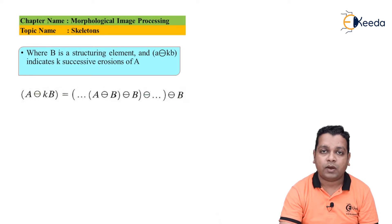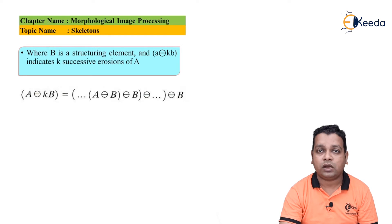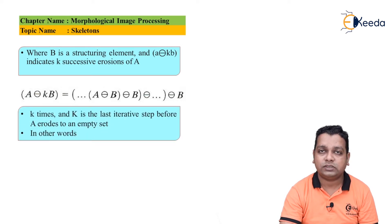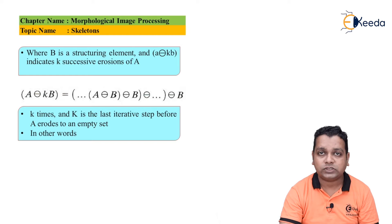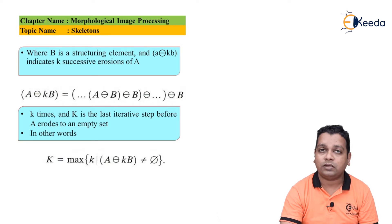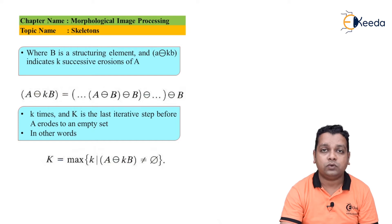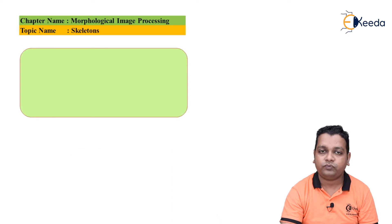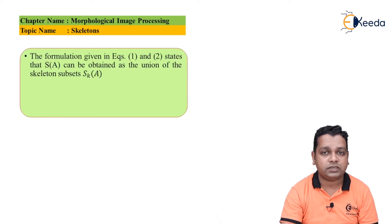The k times successive erosion means: we find the erosion of A by B, then erode the intermediate result again, repeating up to k successive steps. Capital K is the last iterative step before set A erodes to the empty set, so that last step is excluded. K is formally defined as the maximum k such that A eroded by k successive B is not equal to the null set (phi).